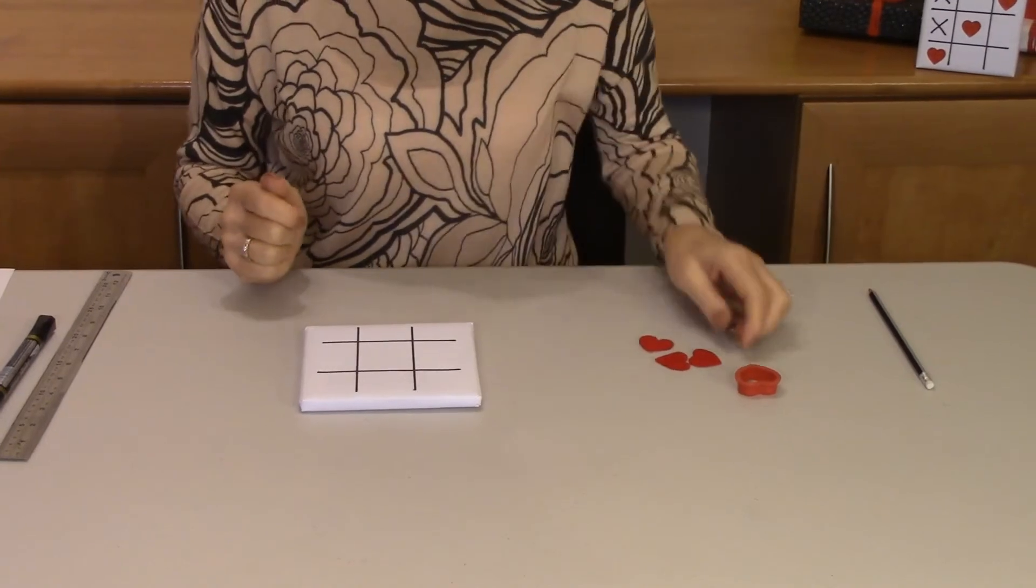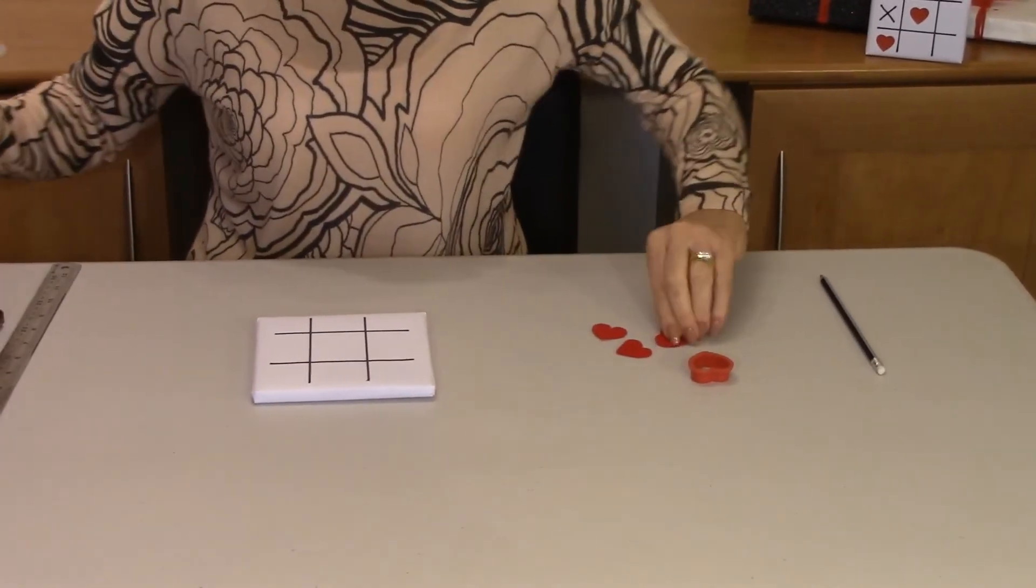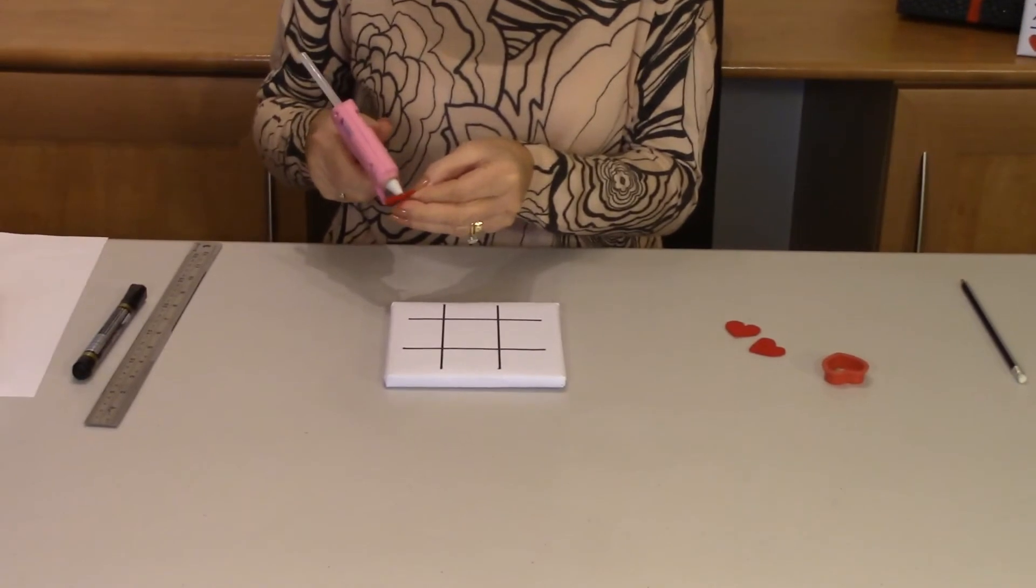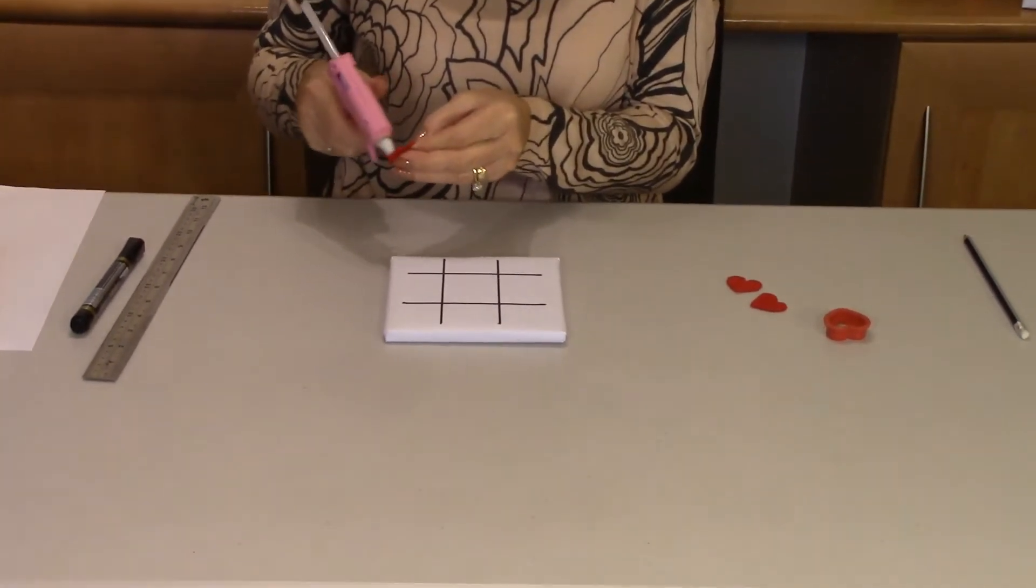So if you're playing noughts and crosses you might use circles and some crosses for your marking.